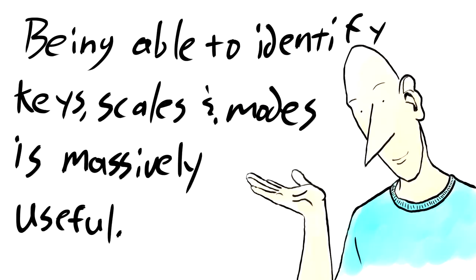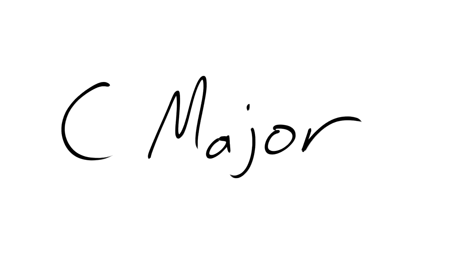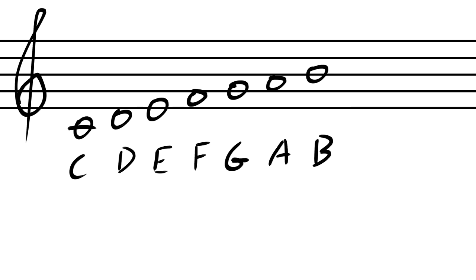Whichever the case, being able to identify keys and by extension scales and modes is massively useful in any of these situations. Let's learn the C major A minor keys and modes before we get into all the cheap mnemonics. Here it is. No sharps or flats. It's the only one you have to memorize on its own. First let's check out the C major scale. It goes from C to B. Seven notes.